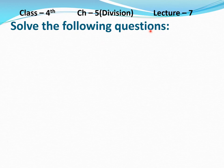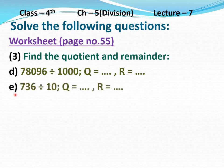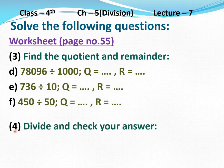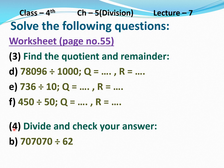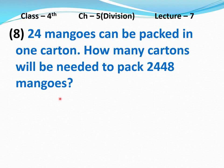Now solve the following questions assigned as homework from worksheet on page number 55. Question number 3: Find the quotient and remainder — Part D: 78096 divided 1000; Part E: 736 divided 10; Part F: 450 divided 50. Question number 4, divide and check your answer — Part B: 77070 divided 62. Question number 8: 24 mangoes can be packed in one carton. How many cartons will be needed to pack 2448 mangoes?